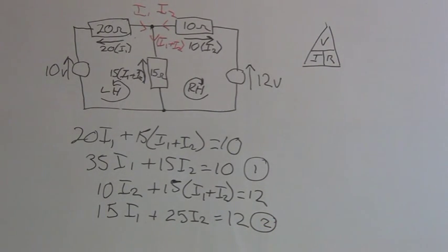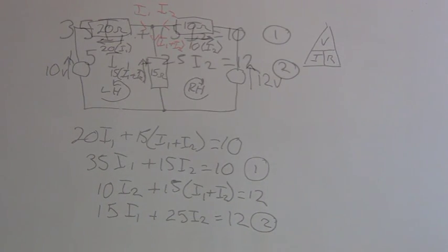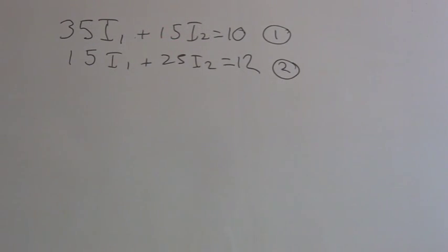So I now have my two equations that I can solve simultaneously. Here we have the two simultaneous equations. From these, we now need to find the value of I1 and I2. The first thing we need to do is look at how we can eliminate one of the unknowns, either I1 or I2. I'll give you a couple of minutes to have a go at this yourself, and then I'll come back and work through the example.